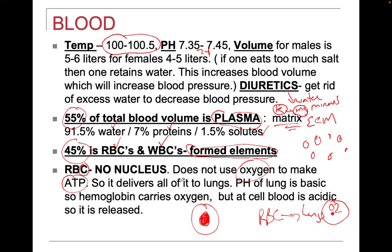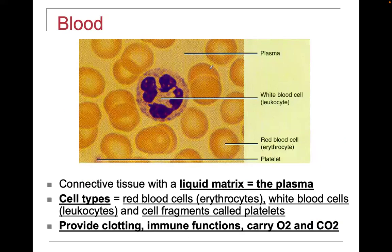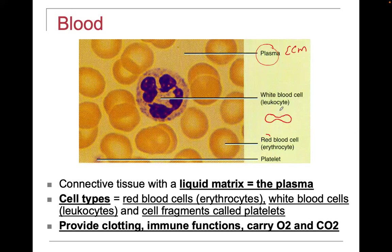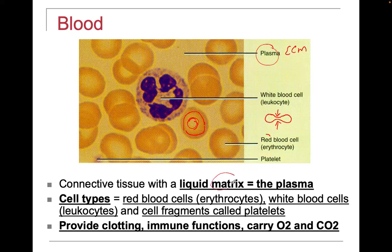Red blood cells don't have a nucleus. When we look at a blood smear, the plasma is the extracellular matrix. The red blood cells are biconcave discs — from the lateral view they are concave on both sides. They are thin in the center, which is why the center appears hypochromic — it looks like a donut. Light passes through the thin center much more easily. The periphery is thicker. These are RBCs or erythrocytes, and the matrix is the plasma.